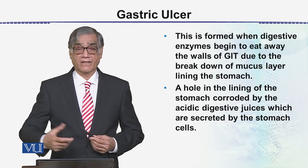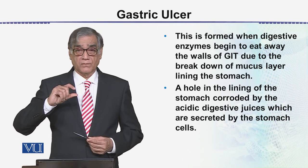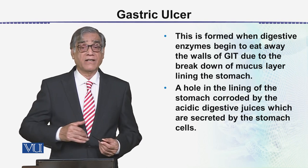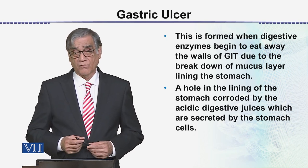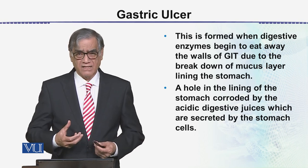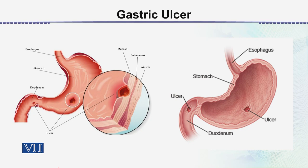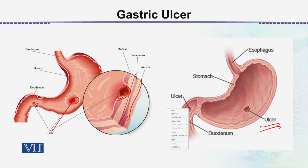So this is what happens in an ulcer. This is the stomach — it has a sore that goes through to the underlying muscles. This is the way it can happen, and this could be a place where it can happen. If this condition is due to an ulcer, we also have the duodenal ulcer.